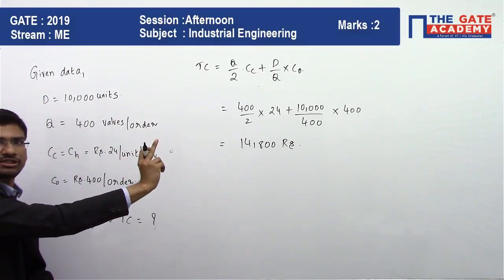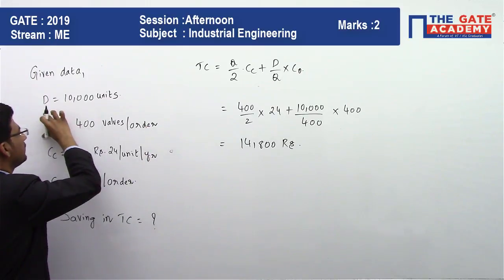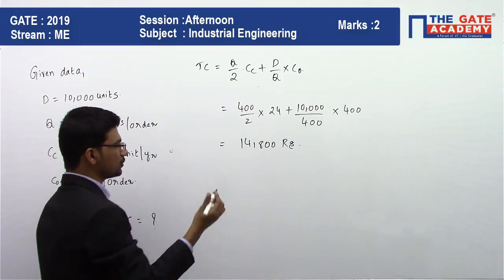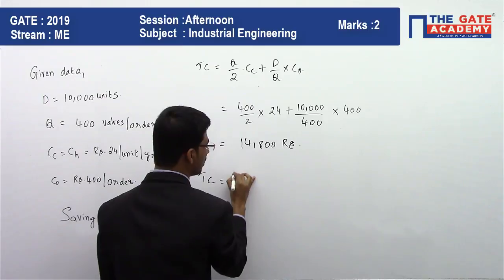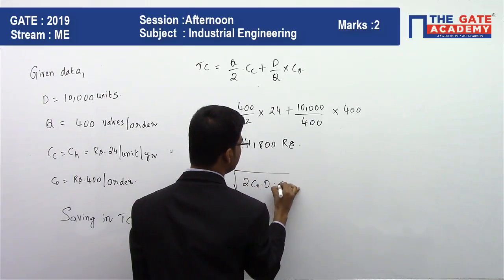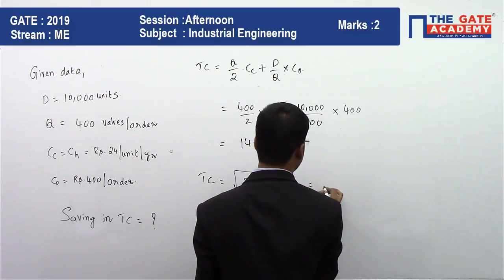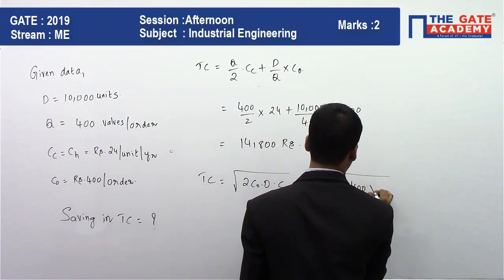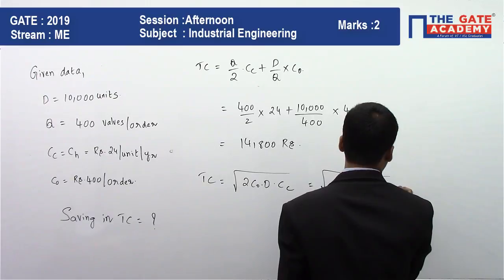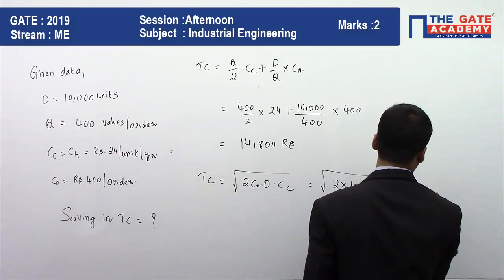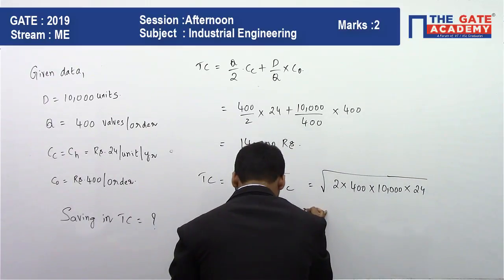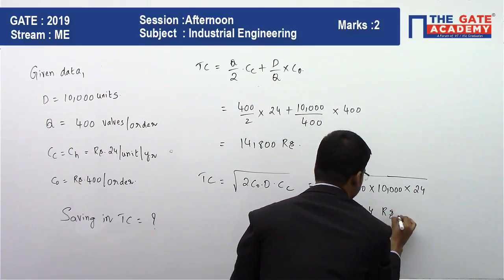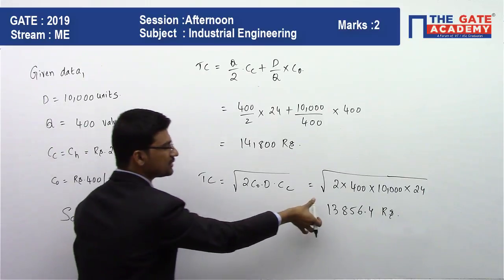This is the total cost per year when ordering 400 valves. Now we find the total cost at EOQ using the formula: TC = √(2 × C₀ × D × CC). Substituting: √(2 × 400 × 10,000 × 24), which gives rupees 13,856.4.